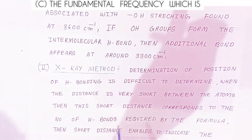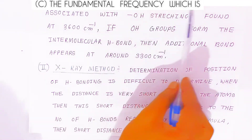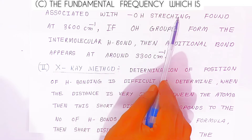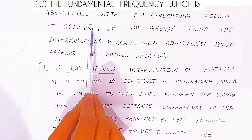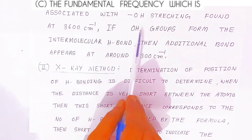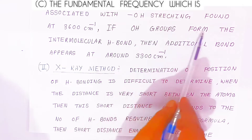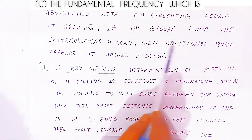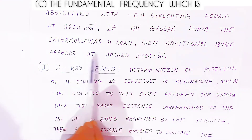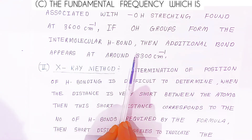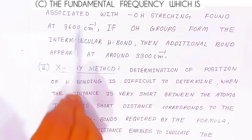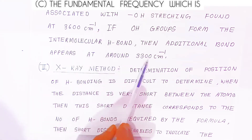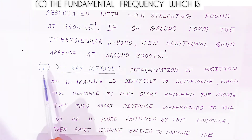The fundamental frequency associated with hydroxyl stretching is found at 3600 cm⁻¹. If a hydroxyl group forms an intermolecular hydrogen bond, then an additional band appears at around 3300 cm⁻¹. This difference indicates the presence of hydrogen bonding.